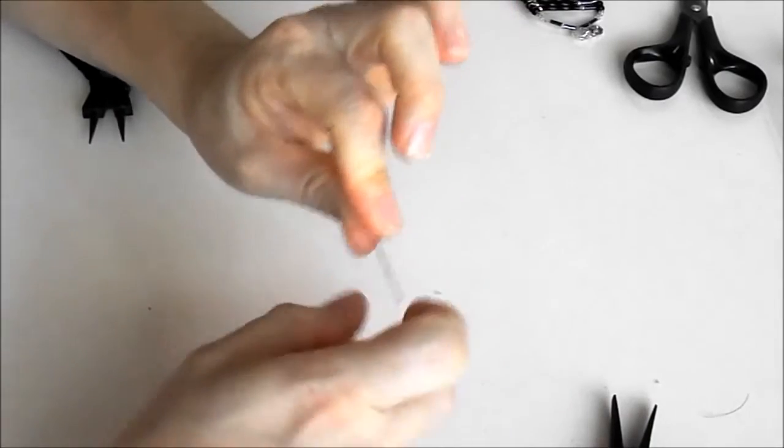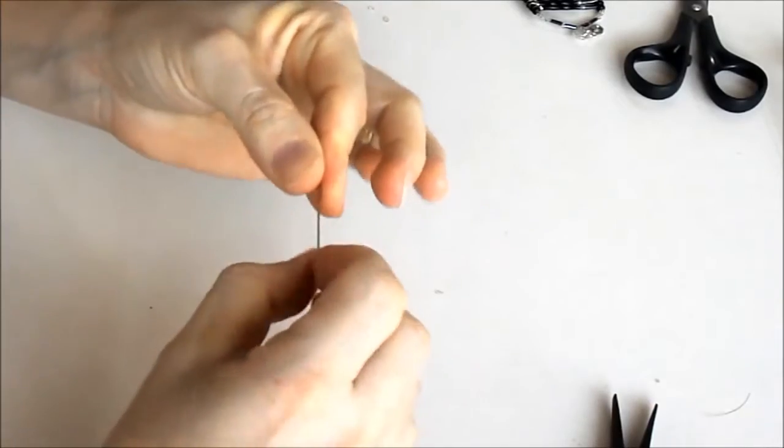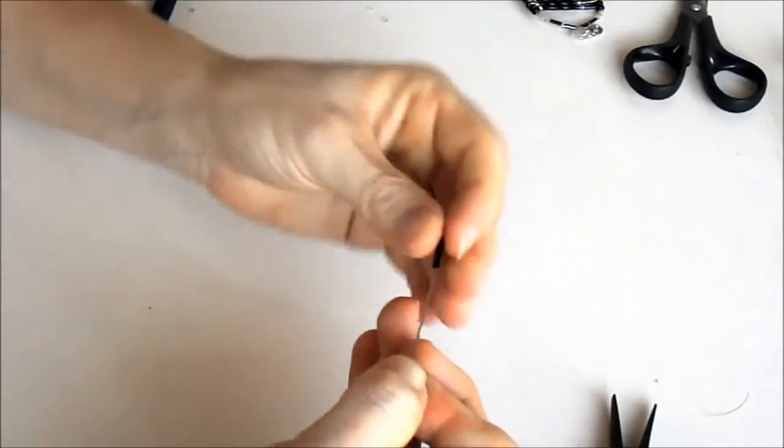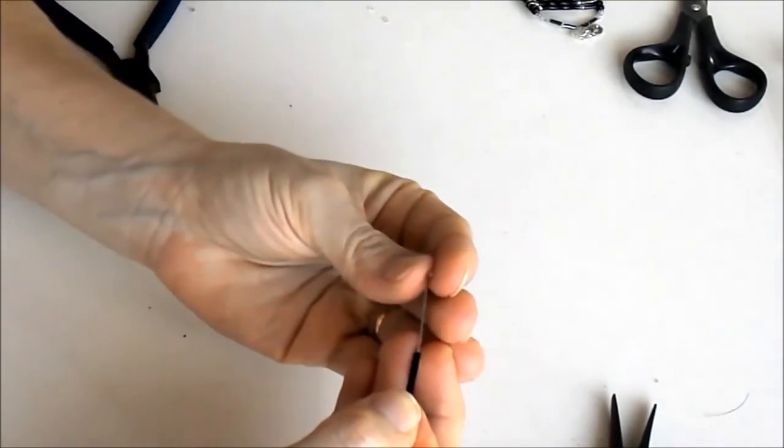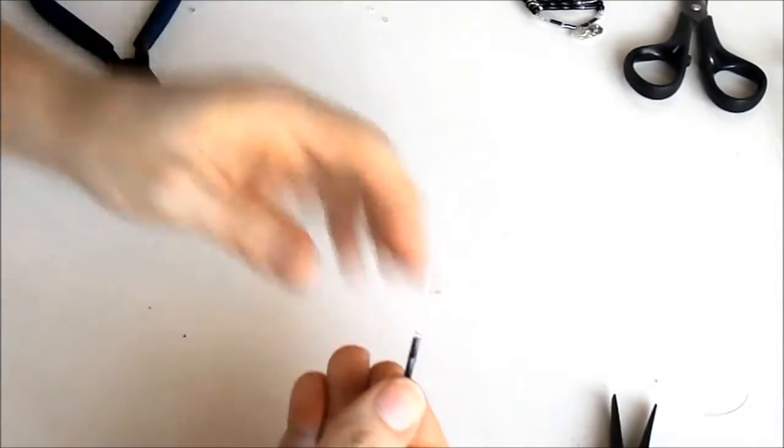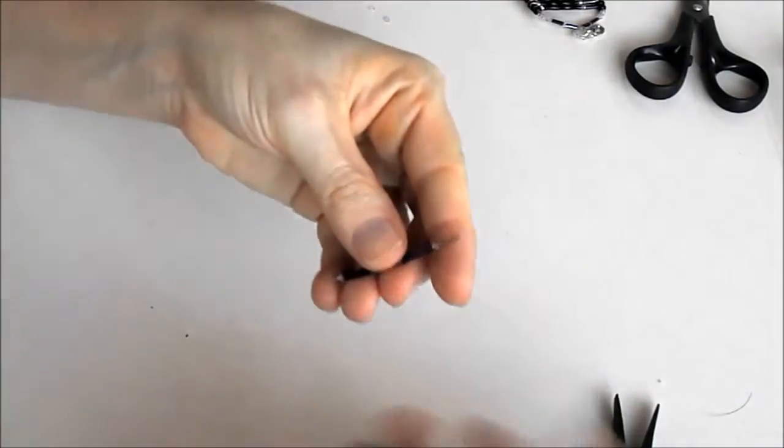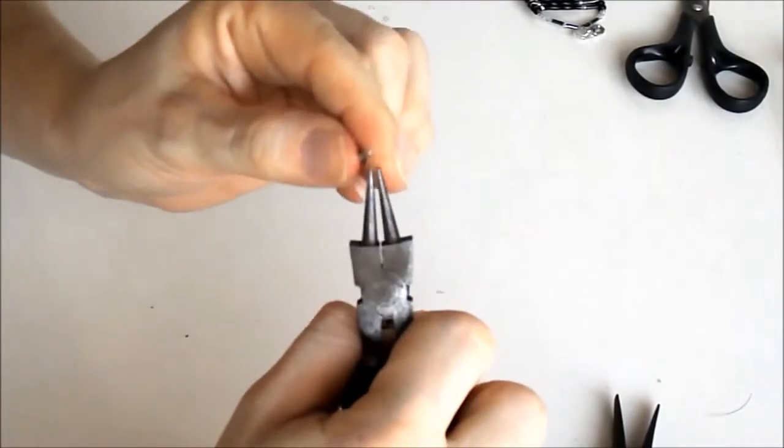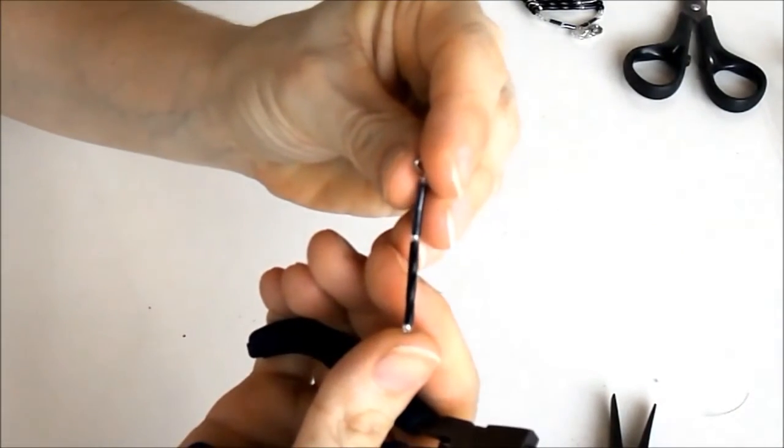Agora eu vou fazer o brinco. Em um alfinete com a cabeça eu coloco uma miçanga, o canutilho torcido, mais uma miçanguinha, dois canutilhos, e outro miçanguinho. E fecho aqui fazendo o arco. E faço oito iguais a este.